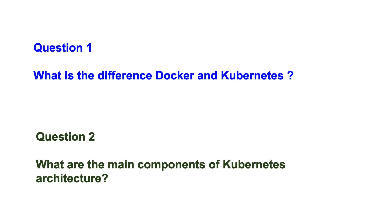Question number two: what are the main components of Kubernetes architecture? This tells the interviewer whether you have knowledge of Kubernetes, because there are a lot of components that interact with each other to form the whole communication between containers. In Kubernetes you have two major things: the control plane (or master) and the node. The components on the control plane include the kube API server, which is responsible for everything — all actions performed using kubectl and all communications go to the kube API server first.